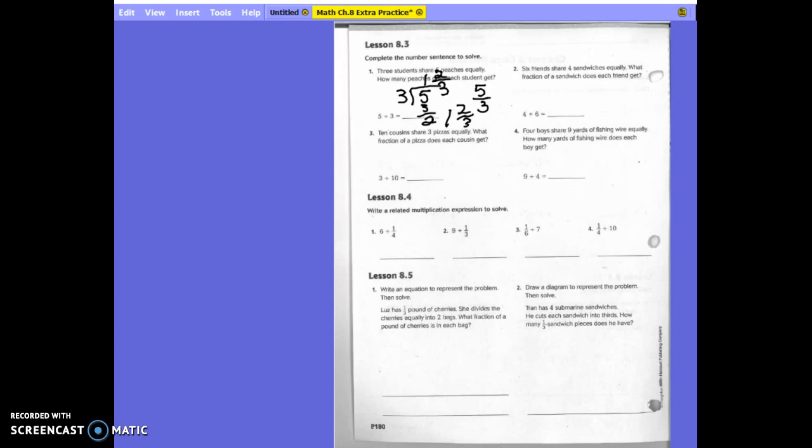So on these, what goes on top? The first number goes on top. The second number goes on bottom. It says write a related multiplication expression to solve. What am I going to multiply here? 6 times 4.